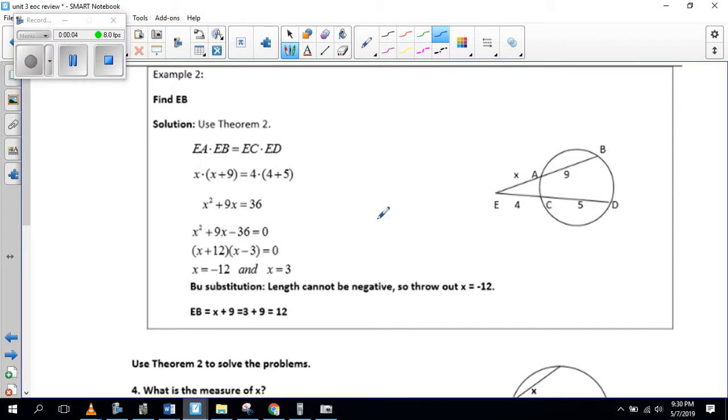Okay, so the next one we're going to be focusing on is when you have two secants and our formula for that is O W equals O W. The way I normally like to write this, the O means the outside. So if you look at this one here, X will be on the outside, four will be on the outside, right? And that's outside of the circle.